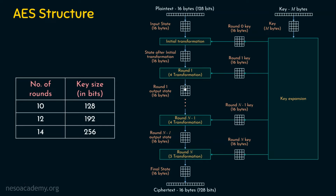After the input state array is transformed using the initial transformation, the result is stored in the state array and given to round one, which takes four transformations. Then it goes to round two, four transformations, and so on. Round n minus one also has four transformations, and round n contains only three transformations. Whatever comes out of round n is stored in the final state array of 16 bytes or 128 bits. For n rounds, we need n round keys, plus one more for the initial transformation — round zero key.